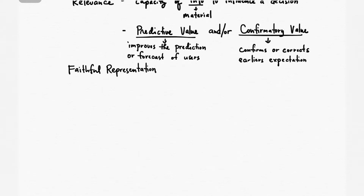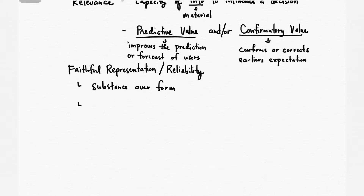The second qualitative characteristic, faithful representation, is related to reliability and it inherently follows the concept of substance over form. So, given a conflict between accounting and law, you will be siding on the accounting. An information will be faithfully represented if you are reporting what is actual.